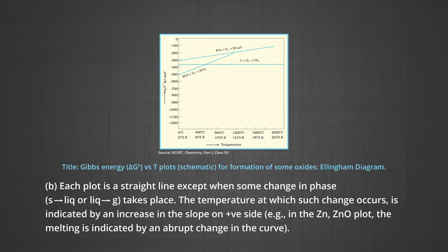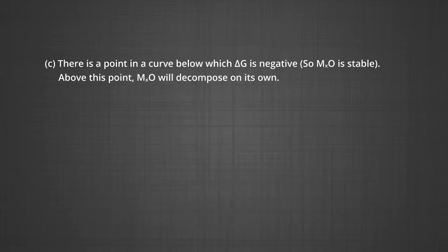For example, in the zinc–zinc oxide plot, the melting is indicated by an abrupt change in the curve. There is a point in the curve below which ΔG is negative, so metal oxide is stable. Above this point, the metal oxide will decompose on its own.